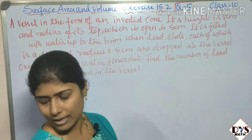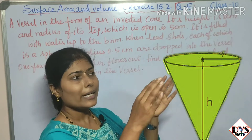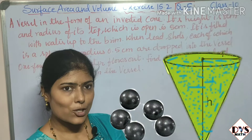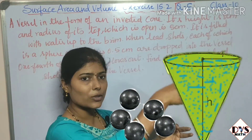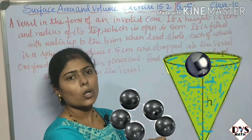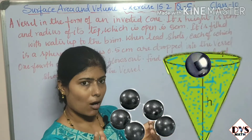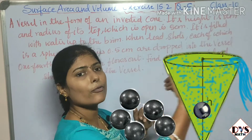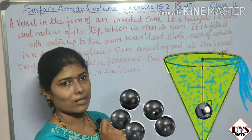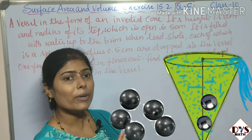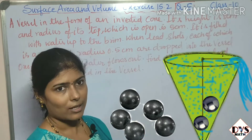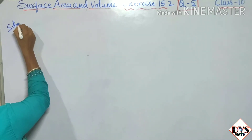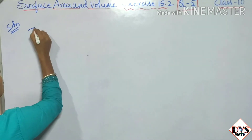The vessel is in the shape of a cone, filled with water. Lead shots in the shape of a sphere are dropped into the cone. When some lead shots are dropped, one-fourth of the water flows out from the vessel. We have to find how many lead shots are dropped into the vessel.